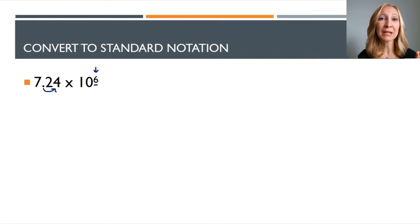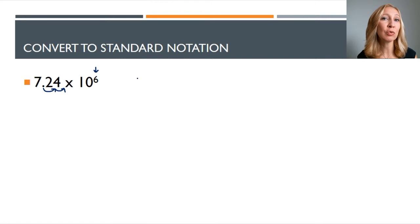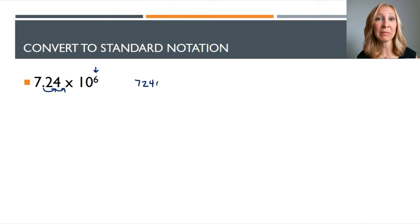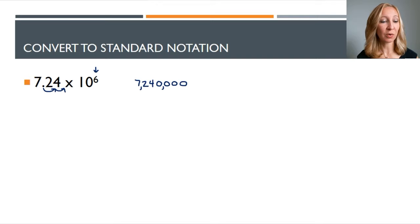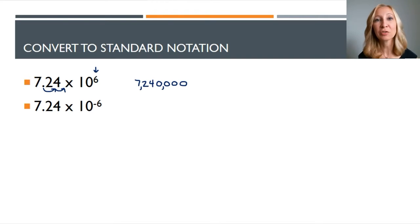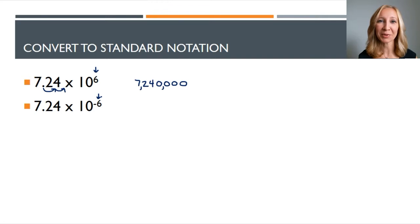Every single time you move that decimal to the right, it represents multiplying that number by ten — we have a base ten system. So if we need to multiply by ten six times, we move the decimal to the right six places and fill in the rest of those places with zeros.